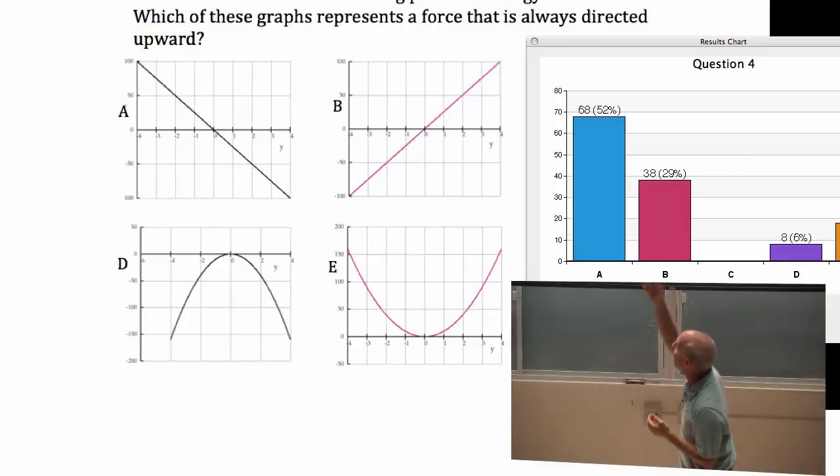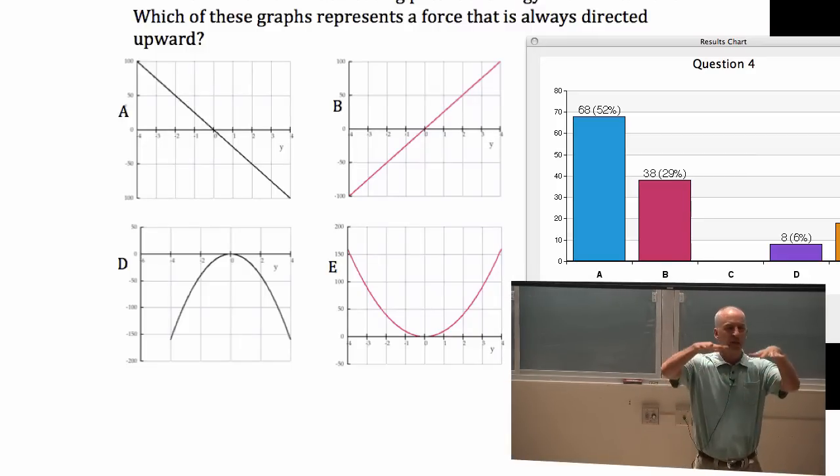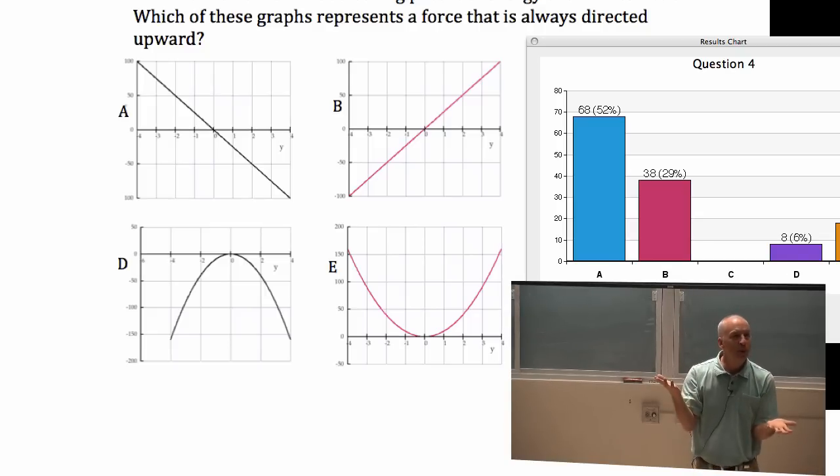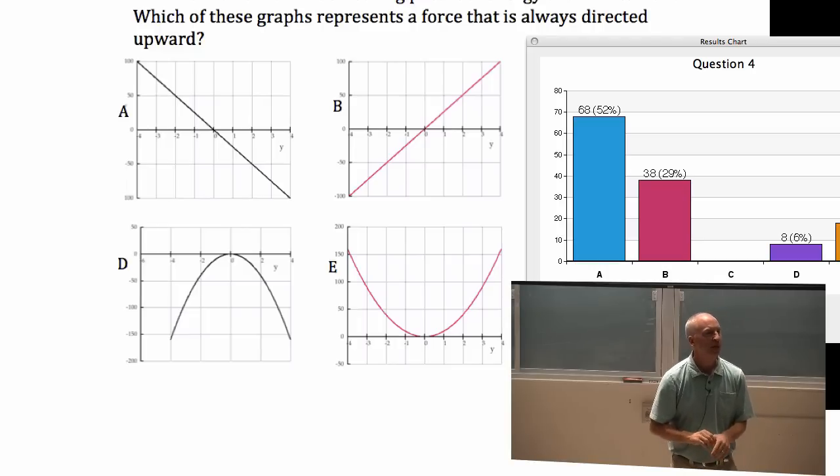So does A, does the potential energy for A get smaller and smaller as the height goes up? How many say yes? How many say no? Okay. So does that work? Is the force in the direction, if the potential energy is getting smaller and smaller and smaller as you go up, then the statement up above says the force must be upward. The force is in the direction that the potential energy is getting smaller.